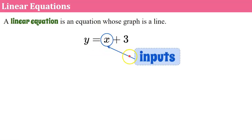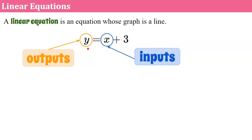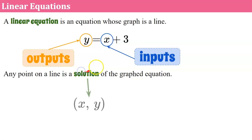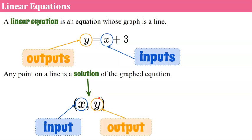X is what we call inputs — in science class you might have learned those are your independent variables. Y represents our outputs or our dependent variables, so y is dependent on the value of x. This is a rule: for any input x, add 3, and that will equal y. Any point on a line is a solution of the graphed equation. A line is an infinite amount of points that all together form a line. Any point on the line will be a solution in the form of an ordered pair (x, y). When you plug in a value for x, you can solve and get y.